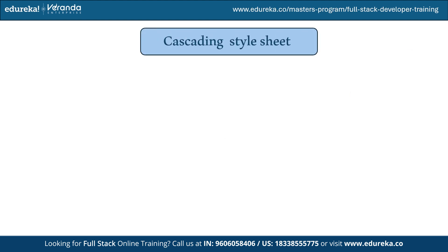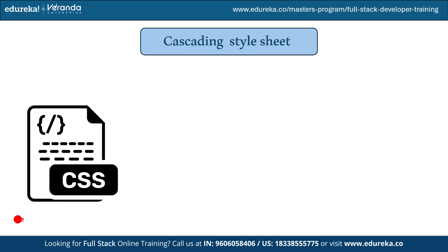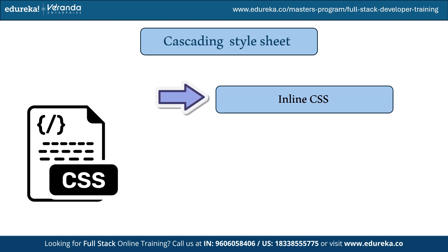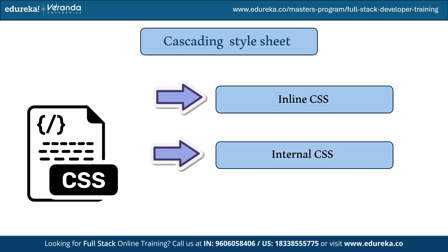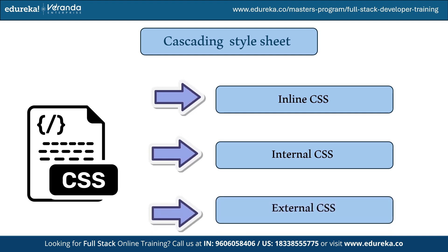CSS stands for Cascading Style Sheets. It is used to style the elements already present in the HTML page and is responsible for how content is presented, including colors, background, and layout. CSS can be done using three techniques: inline CSS, where style is applied along with the HTML element using the style attribute; internal CSS, also known as embedded CSS, done inside the HTML document using the style attribute; and external CSS, done in a separate .css file in the same folder, linked to the HTML page.